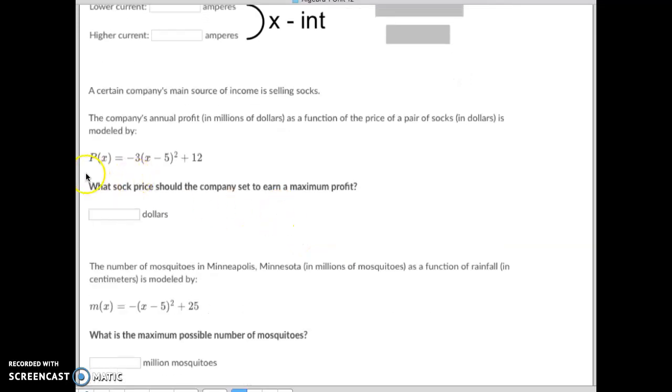If they give you this one where it says, here's this price here, the company's annual profit in millions of dollars is a function of the price per pair of socks. Which means when they say, what's the sock price when the company should earn a maximum profit? And I miswrote this, I wrote stock price, it should have been sock price, sorry. I misread that a little bit.